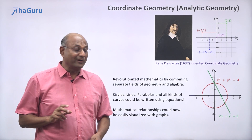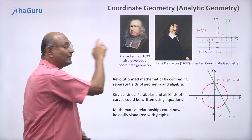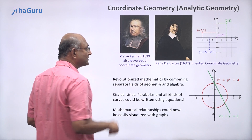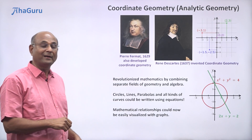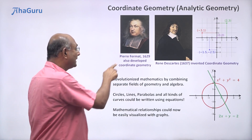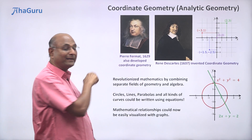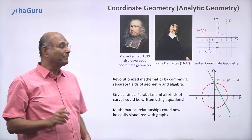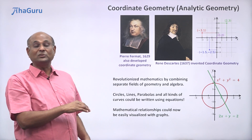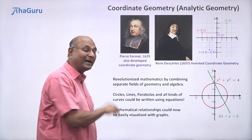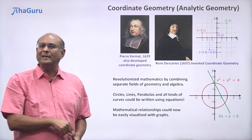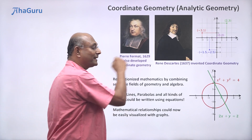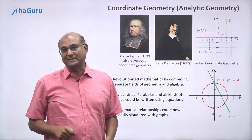Actually, it turned out that in 1629 itself — a few years before Descartes — Fermat, whose name is written as Fermat (he's also from France, so we call him Fermat), had developed coordinate geometry before Descartes. Then why is Fermat not given the credit? Because he didn't publish his results, whereas Descartes published his results.